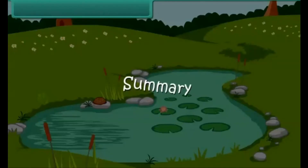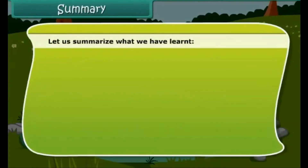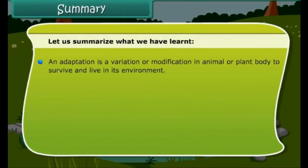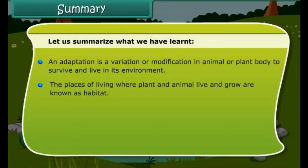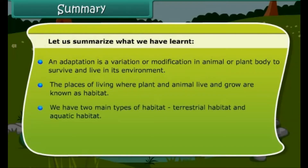Let us summarize what we have learned. An adaptation is a variation or modification in an animal or plant body to survive and live in its environment. The places of living where plants and animals live and grow are known as habitat. We have two main types of habitat: terrestrial habitat and aquatic habitat.